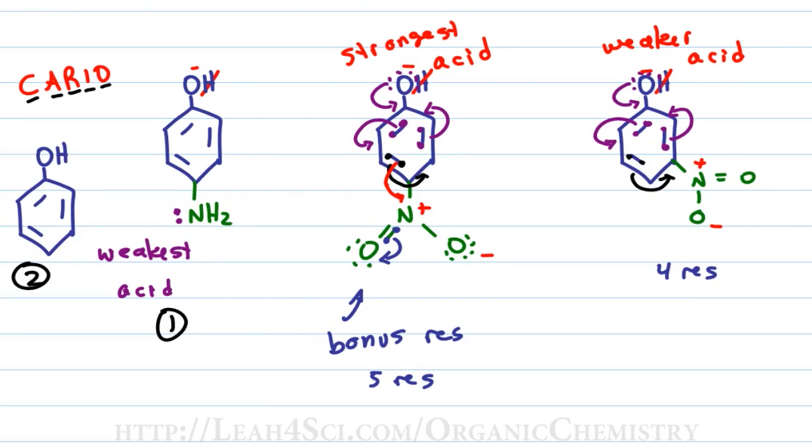Then for number three, we have the one with the nitro group in the meta position because the nitro is positive and that means it stabilizes the negative coming into the ring but it doesn't give us a bonus resonance structure. And finally, a nitro group in the para position with a bonus resonance structure is the strongest acid in this sequence.